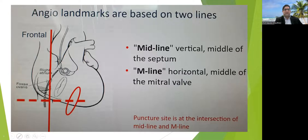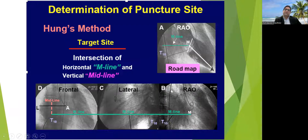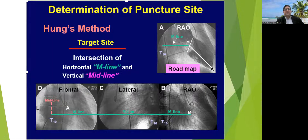Nowadays we follow the Hung method. In the AP view, place the needle just one space below the pigtail in the non-coronary sinus. In the lateral view it should be approximately two-thirds to one-third — mostly at the one-third mark. In RAO, the needle should look away from the pigtail to prevent injury to the aortic root. The needle should be positioned between the ascending and descending parts of the pigtail catheter, and rotated clockwise to move away from the coronary sinus.